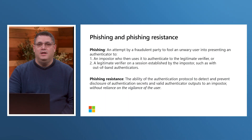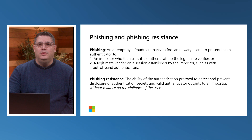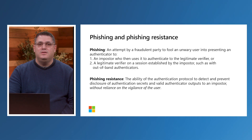First, let's define phishing and phishing-resistant. Phishing attacks are attempts by fraudulent parties to fool an unwary user into presenting an authenticator, either to an imposter who then uses it to authenticate to the legit verifier, or to the legit verifier on a session established by the imposter, such as with out-of-band authenticators. Phishing resistance is the ability of the authentication protocol to detect and prevent disclosure of authentication secrets and valid authenticator outputs to an imposter without a reliance on the vigilance of the user.